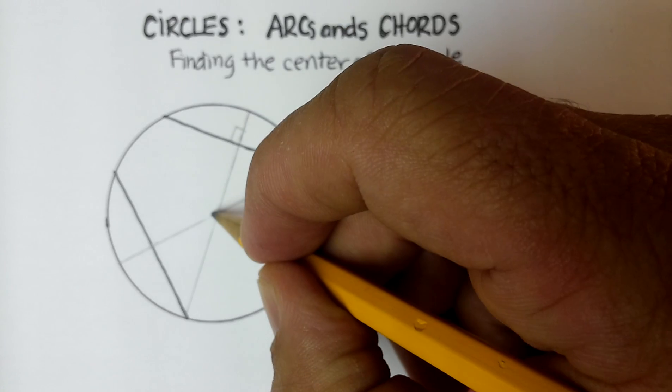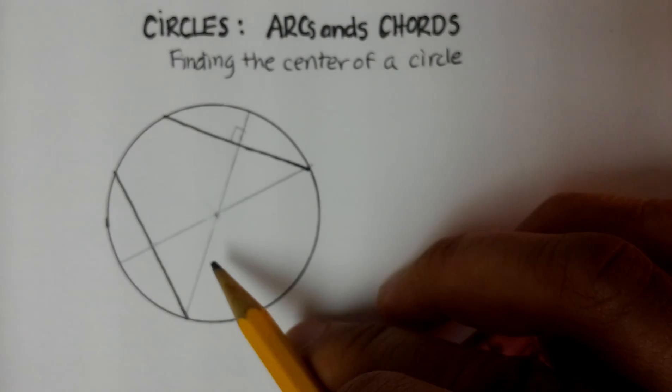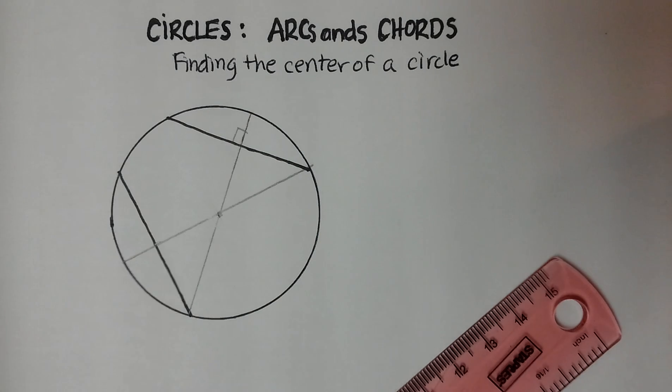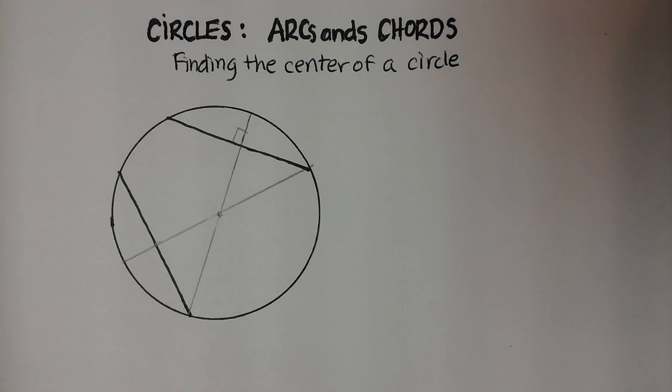Where the two perpendicular bisectors meet is the center of the circle. Okay? So let's go ahead and write that up a little bit more formally.